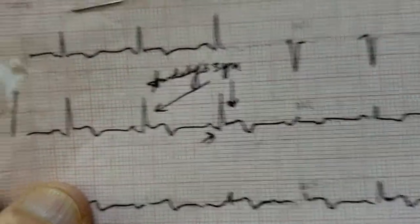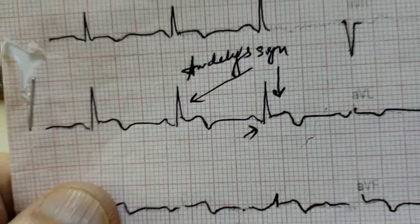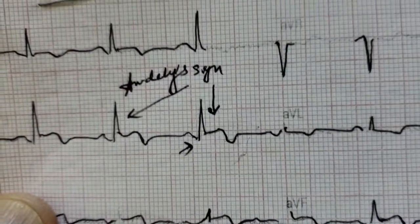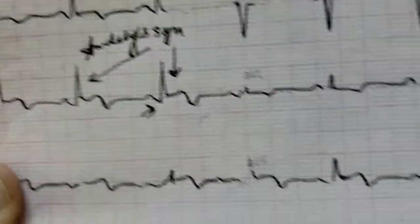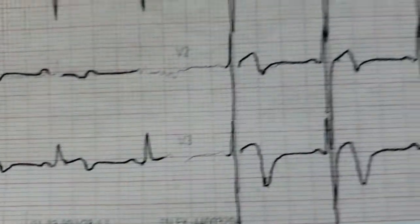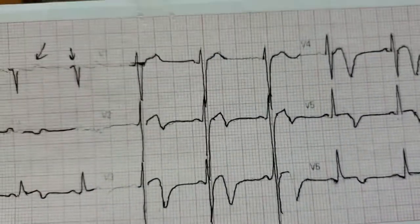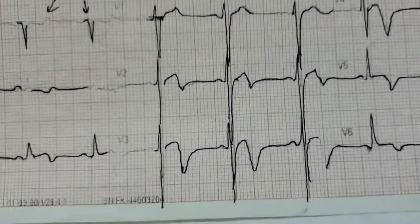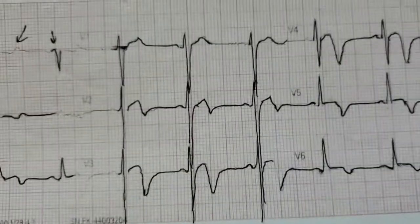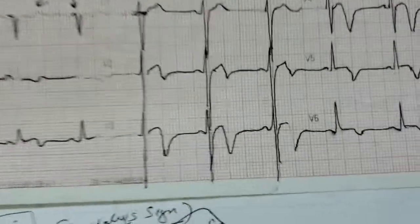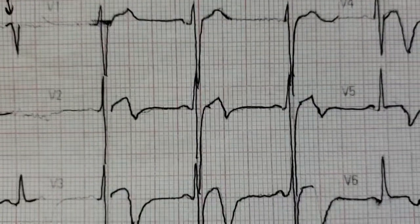This is diffuse ST segment and T wave changes. This represents the second stage of pericarditis and should not be confused with Wellens syndrome.